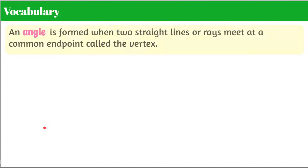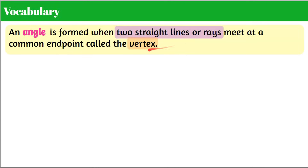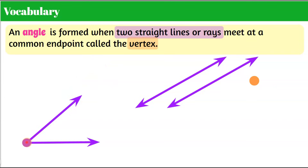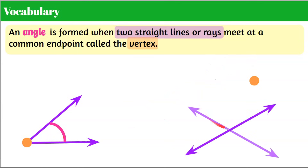Here's some vocabulary. An angle is formed when two straight lines or rays meet at a common endpoint called the vertex. A ray has an endpoint and extends infinitely in one direction, while a line extends infinitely in both directions. When two lines intersect, they share a common vertex and form four angles.